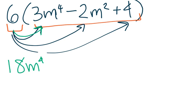So I multiplied it by the first term and I'm going to do the same. I'm going to now multiply it by the next term. So that gives me 6 times negative 2m squared gives me negative 12m squared, and then I have one more term.